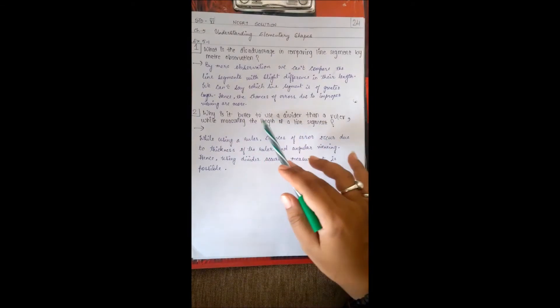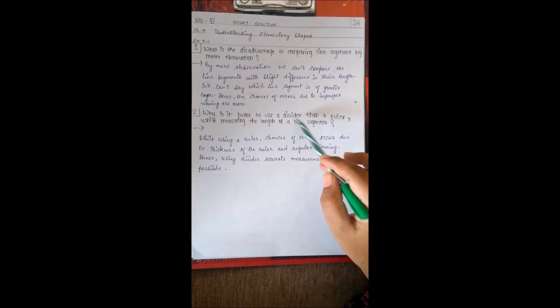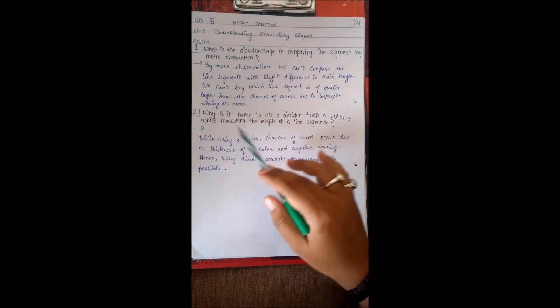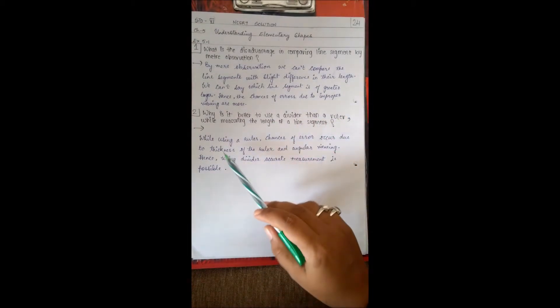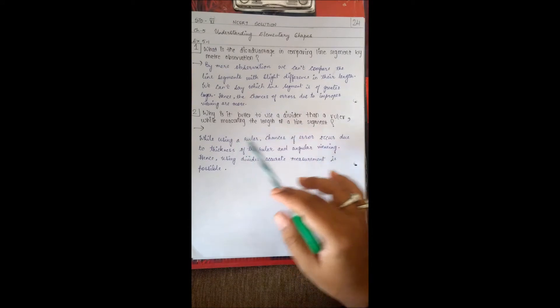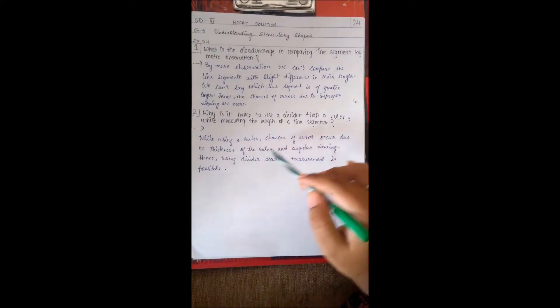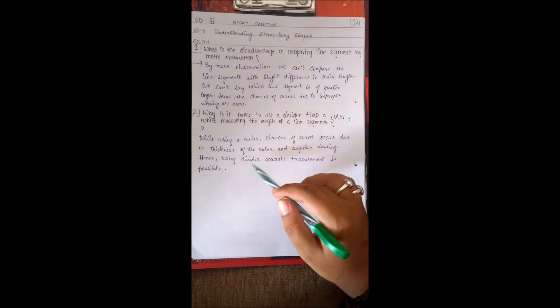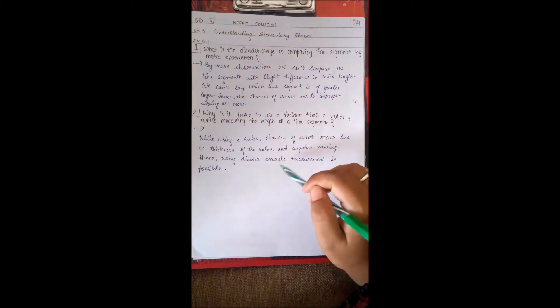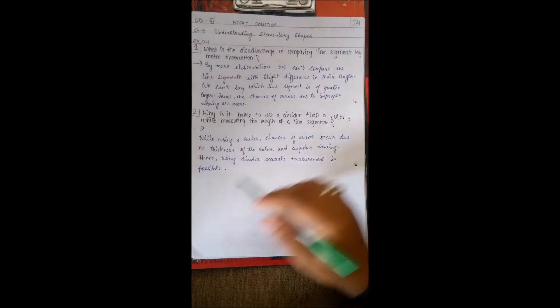Question 2: Why is it better to use a divider than a ruler while measuring the length of a line segment? While using a ruler, chances of error occur due to the thickness of the ruler and angular viewing. Hence using a divider, accurate measurement is possible.